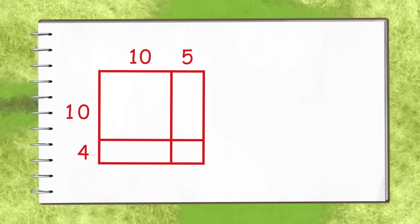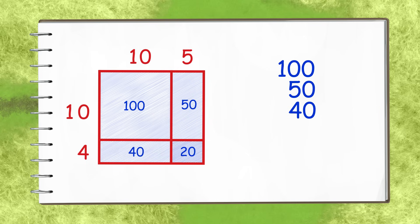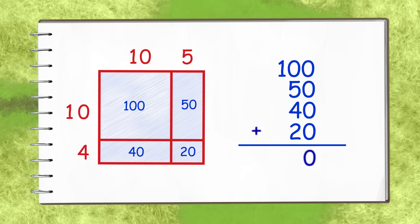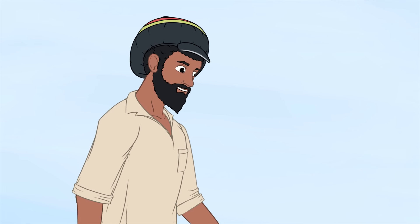Multiply the tens to get the foundation. Then the other place values get multiplied. Add the partial products up and check your work twice.